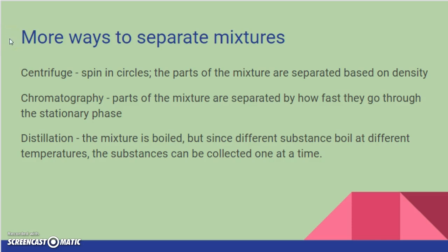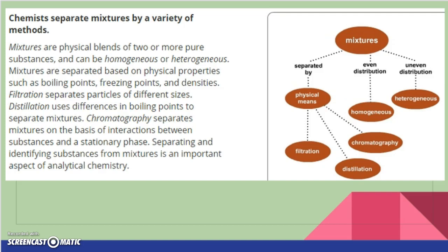So add to your notes, please, more ways to separate mixtures: we have the centrifuge, chromatography, and distillation. So go ahead and hit pause and put all these in your notes. And then when you're done, chemists separate mixtures by a variety of methods. Mixtures are physical blends of two or more pure substances. Again, what are our pure substances? They are compounds and elements. Which one's on the periodic table? Elements. Which one is more simple? Elements. So compounds are elements that are chemically bonded together. Kind of think of it like super glue. We use super glue, they're stuck together. We can chemically pull them apart most of the time, just like some things you stick together with super glue, if you use the right chemicals you can get it apart, but for the most time they stay together.